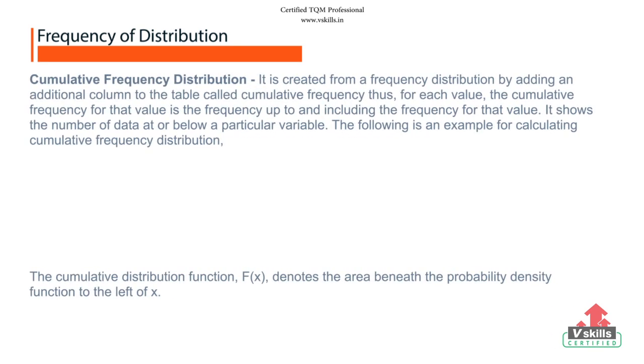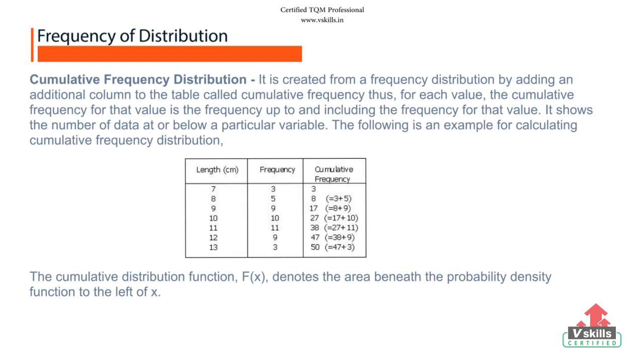Cumulative frequency distribution: technically, a cumulative frequency distribution is the sum of the class and all classes below it in a frequency distribution. It is created from a frequency distribution by adding an additional column to the table called cumulative frequency. Thus, for each value, the cumulative frequency for that value is the frequency up to and including the frequency for that value. It shows the number of data at or below a particular variable.